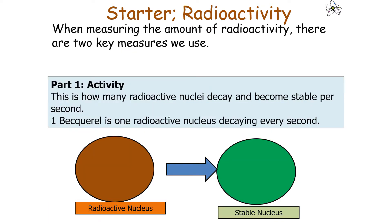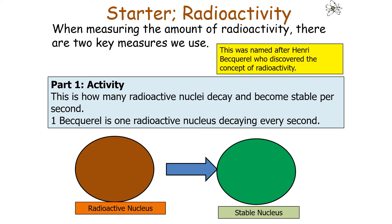When measuring the amount of radioactivity, there are two key measures. Number 1 is activity, which is how many radioactive nuclei decay and become stable every second. One Becquerel is one radioactive nucleus decaying every second, and this unit was named after Henri Becquerel, who discovered the concept of radioactivity.